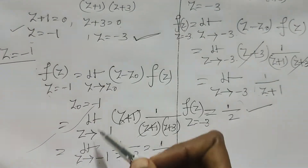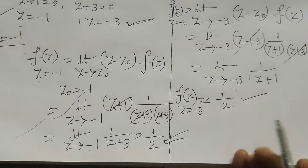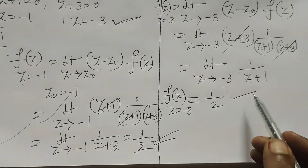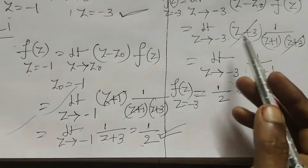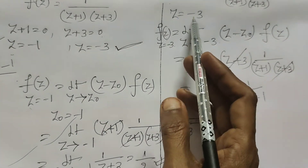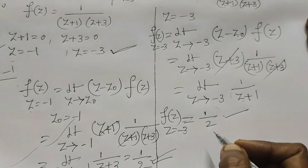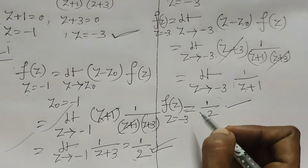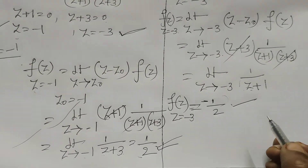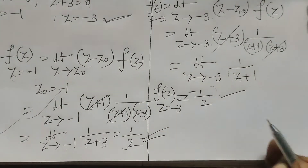So at the pole z = -1, the residue of f(z) is 1/2, and at the pole z = -3, the residue of f(z) is -1/2. Thank you.